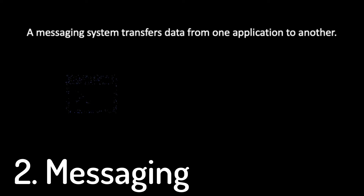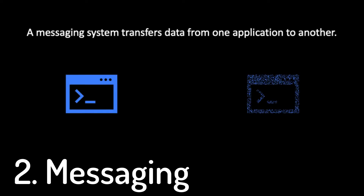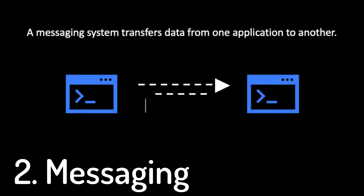Number two: messaging. A messaging system is responsible for transferring data from one application to another, but does not require messages to arrive in order.